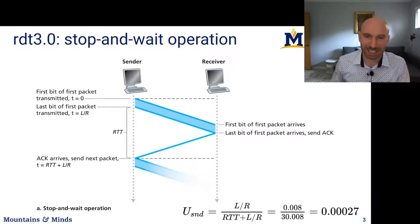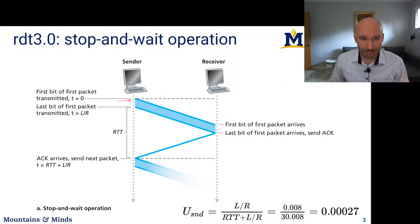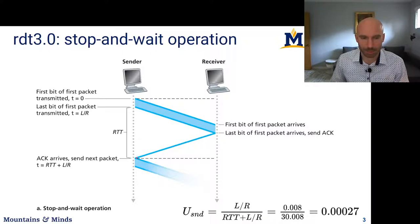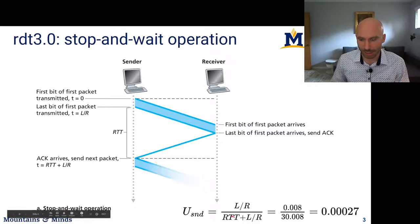Let's visualize this. The sender transmits data — it takes some time to serialize those 8,000 bits. When the last bit reaches the receiver, the receiver sends an acknowledgement. The round trip time from the last bit sent to the acknowledgement being received, plus the serialization delay, is our denominator. The useful time is just that serialization time — that's how we get this utilization calculation. This is called a stop-and-wait protocol.